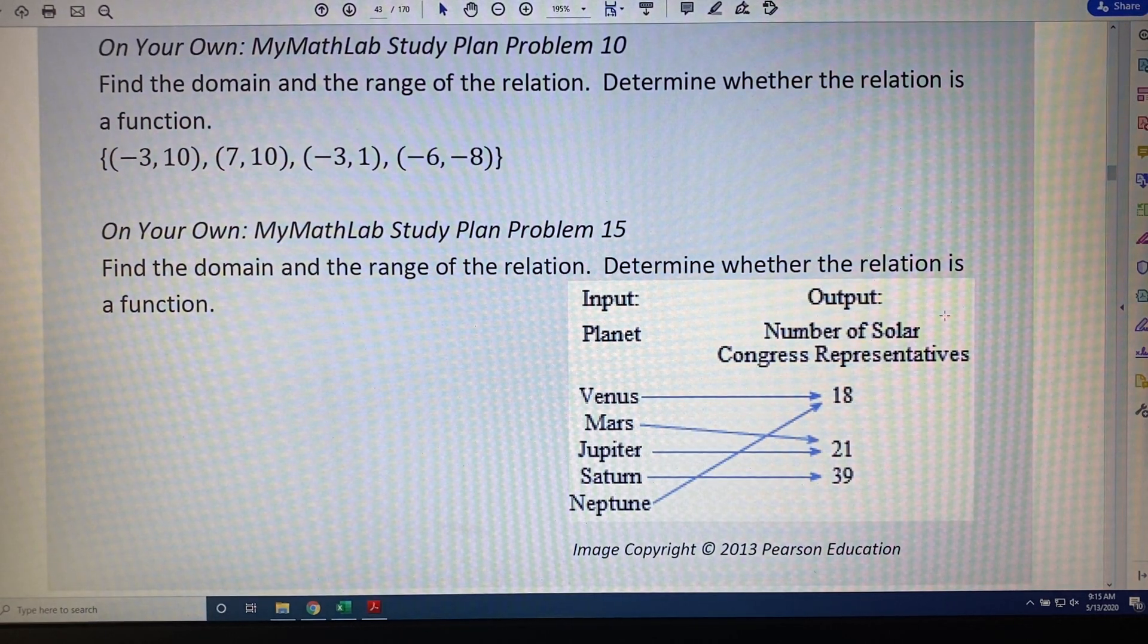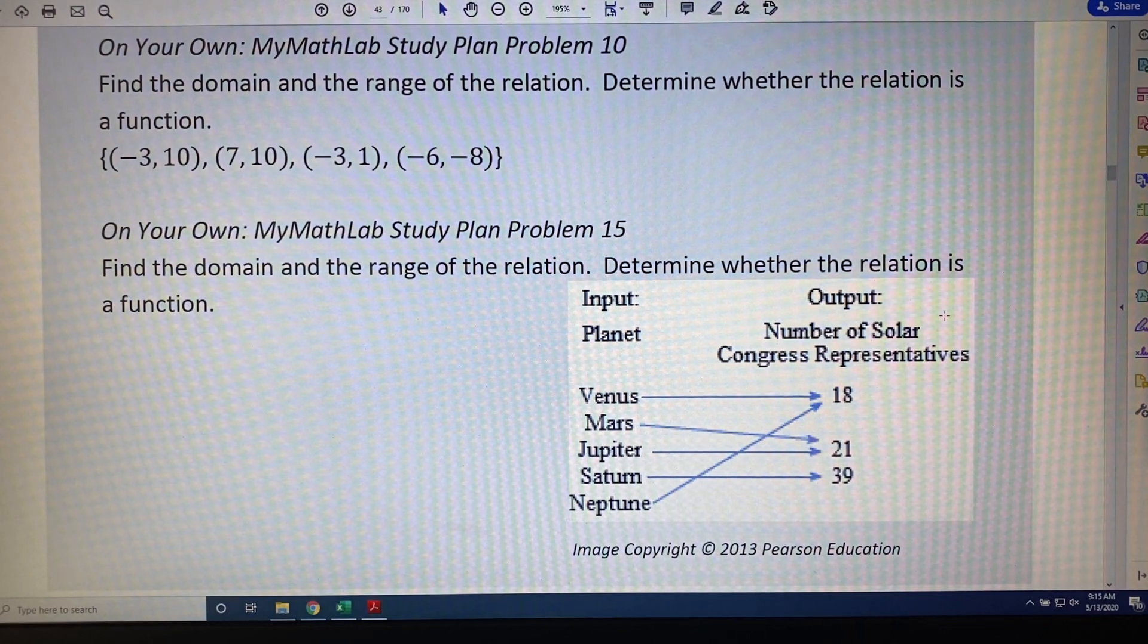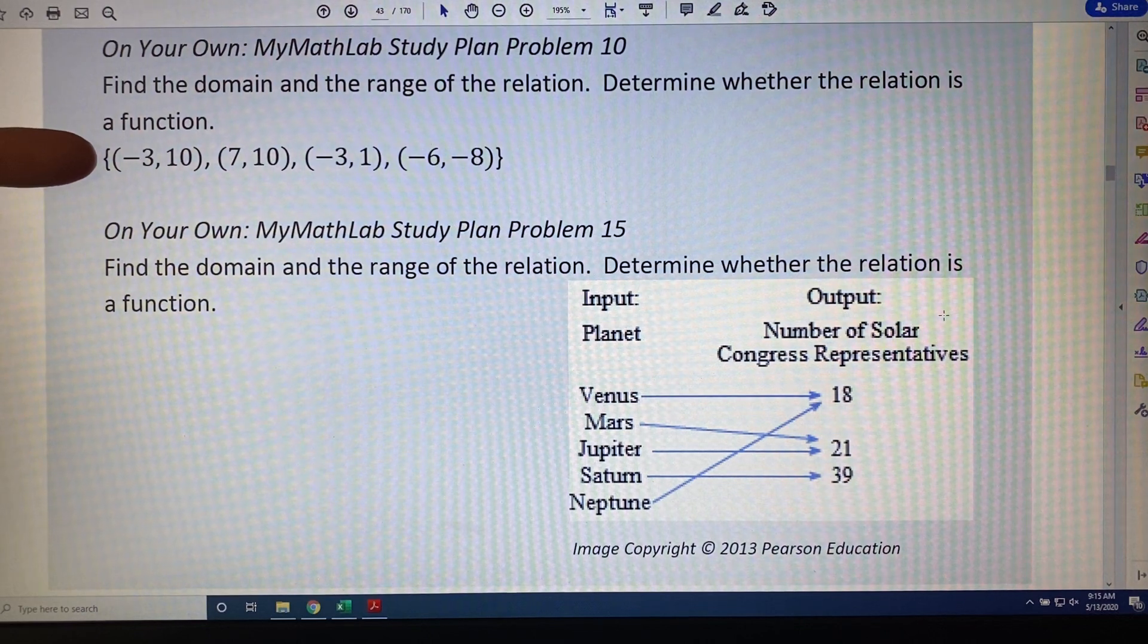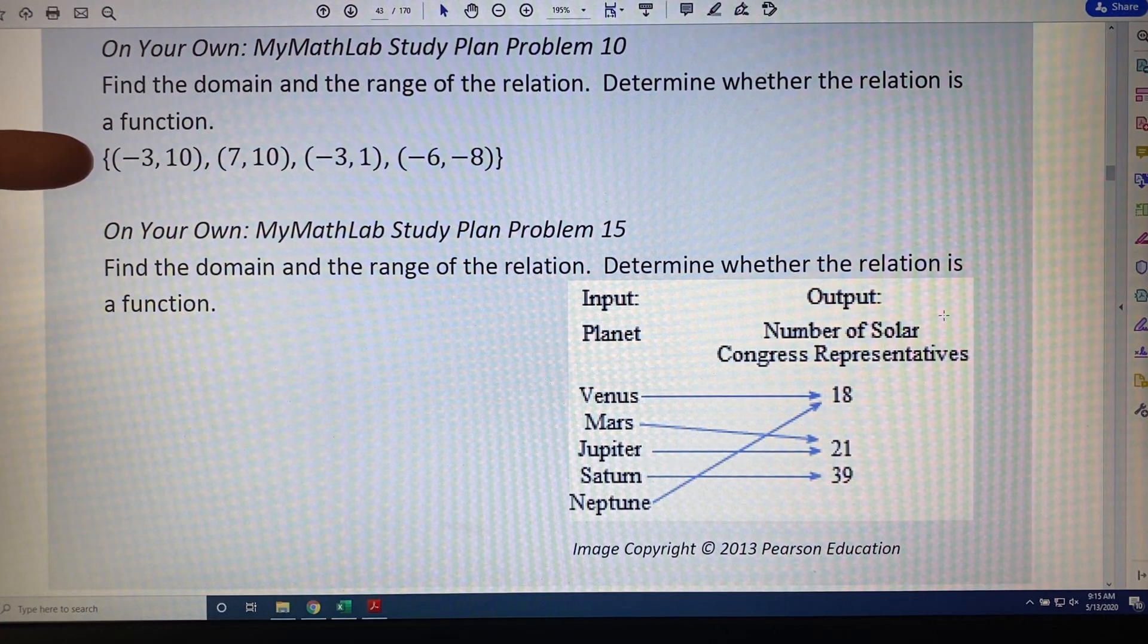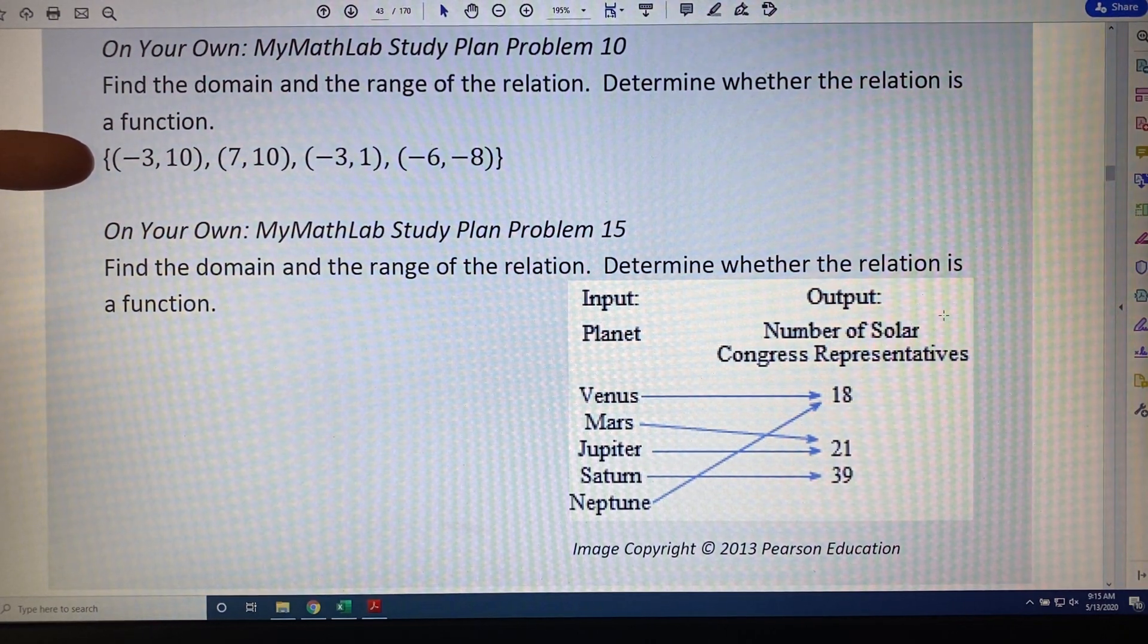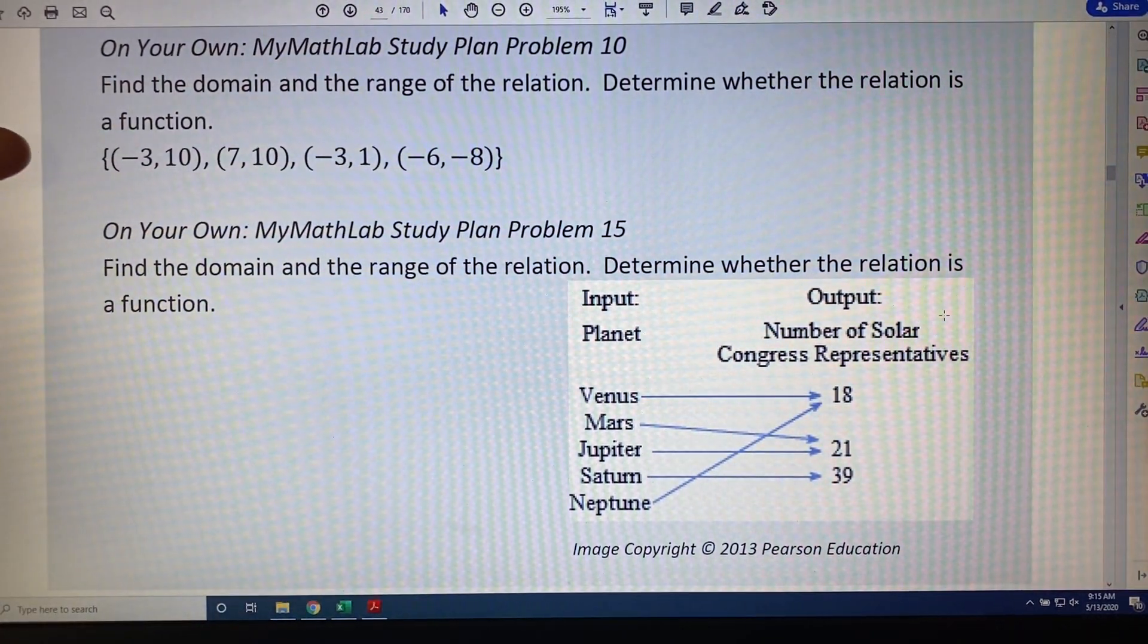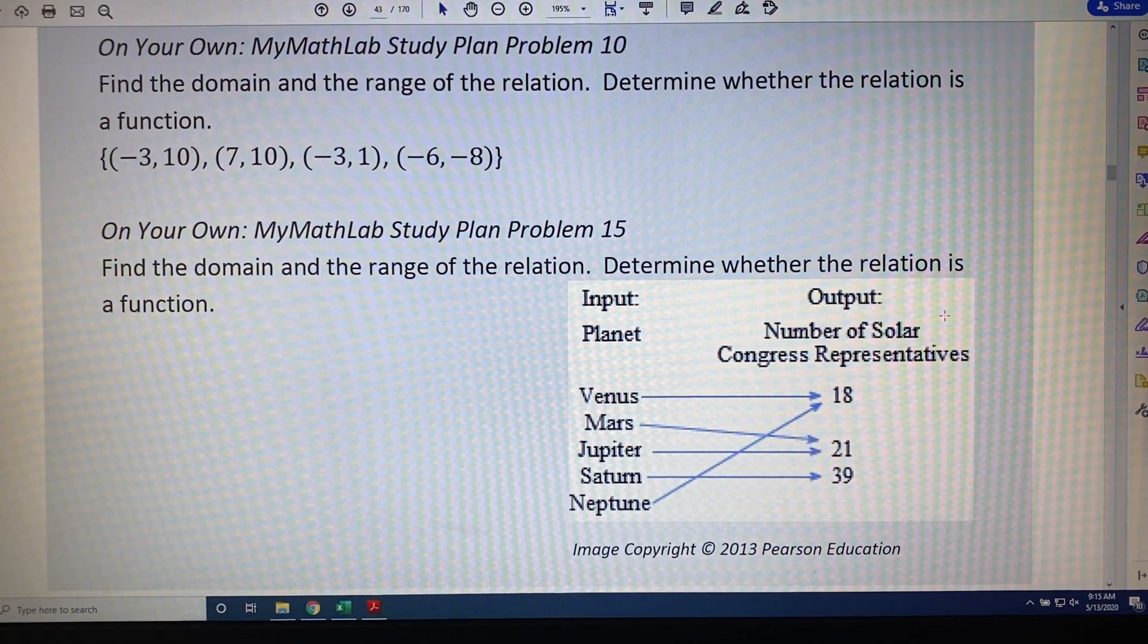Now, let's talk about domain and range for a moment. Domain is a collection of all of the inputs. For a collection of ordered pairs, that would be all of the x-coordinates. And there's a little rule that we agree to follow, which is that we don't duplicate inputs. So, for example, if an input happened to show up more than once in a relation, we only list it one time.